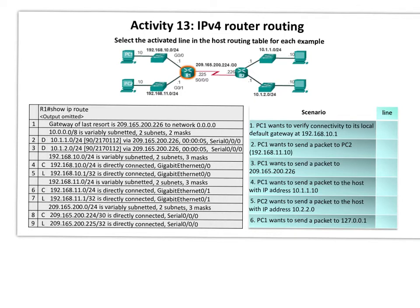We are at the end of chapter 6 and we're still discussing router routing. Unlike host routing, routers have two types of routes: local routes and remote routes. Also unlike the host, routers may have multiple exit interfaces. In this example we are focusing on router 1, which has three exit interfaces or three exit doors.